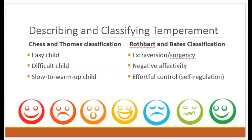Extroversion or surgency refers to how bold, active, and cheerful a child seems to be. Negative affectivity refers to a child's tendency to be fearful, frustrated, sad, or uncomfortable. Effortful control refers to a person's ability to keep their arousal level from getting too high and have strategies for soothing themselves — so you might feel really, really angry on the inside, but instead of yelling or starting a fight, you might walk away and do something to help distract you from the encounter.